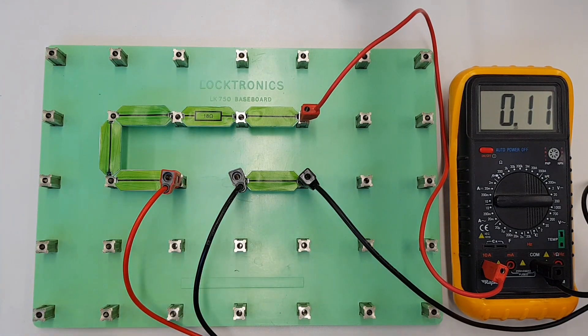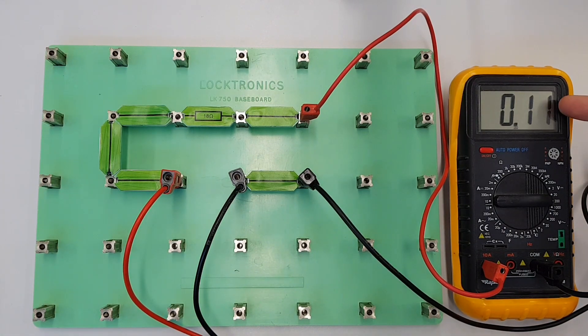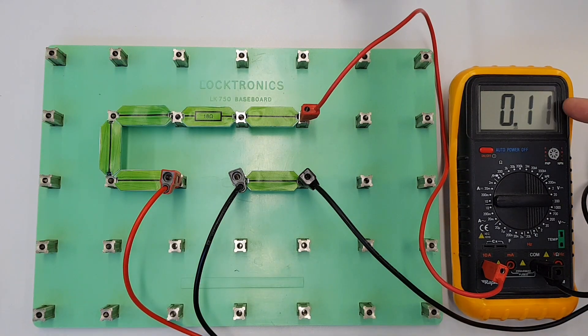So as you can see there the resistance has increased and the current has decreased. So as we've increased the resistance the current has dropped to 0.11.